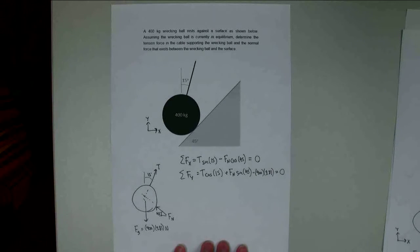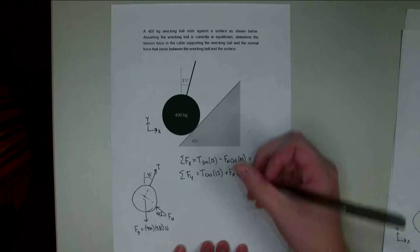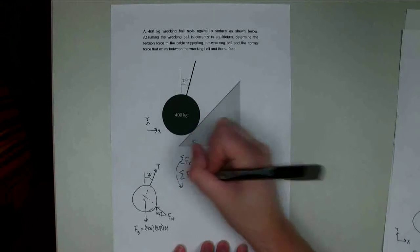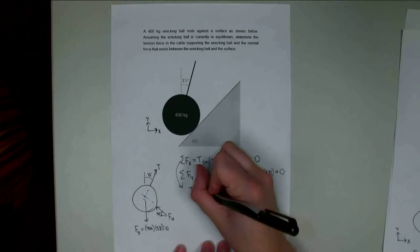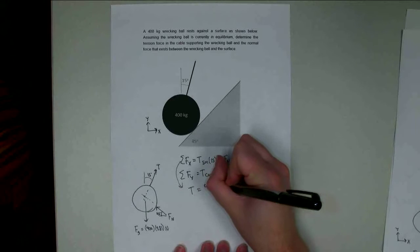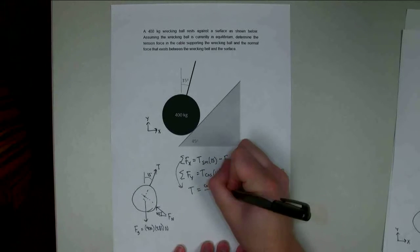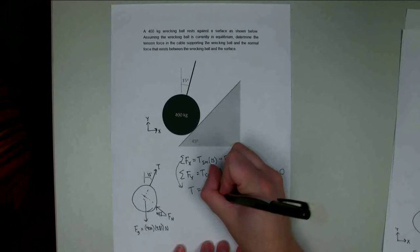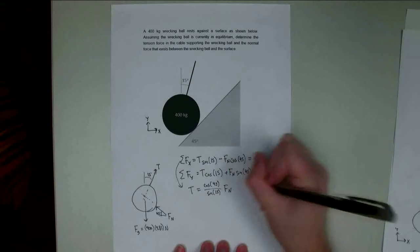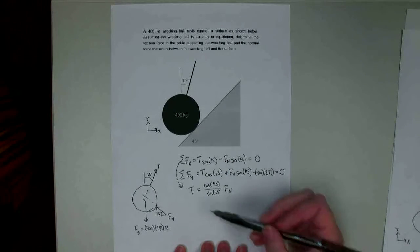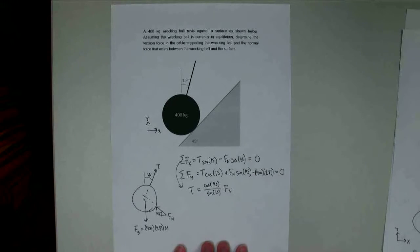Now I need to start solving for the variables. I've got two unknowns in each equation, so I'll need to solve for one variable in terms of the other and then substitute in that value. Let's look at the top equation. I can solve for t, and t is going to be equal to cosine 45 over sine 15 times Fn.